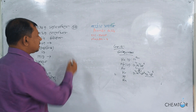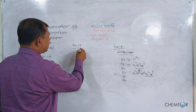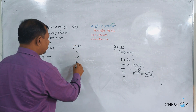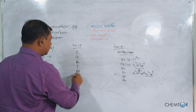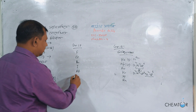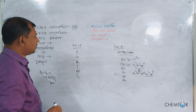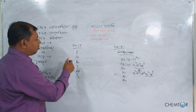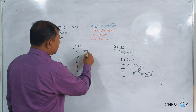Here we go, Group 17. Group 17 has fluorine, chlorine, bromine, iodine, astatine, TS, tennessine. This is Group 17.